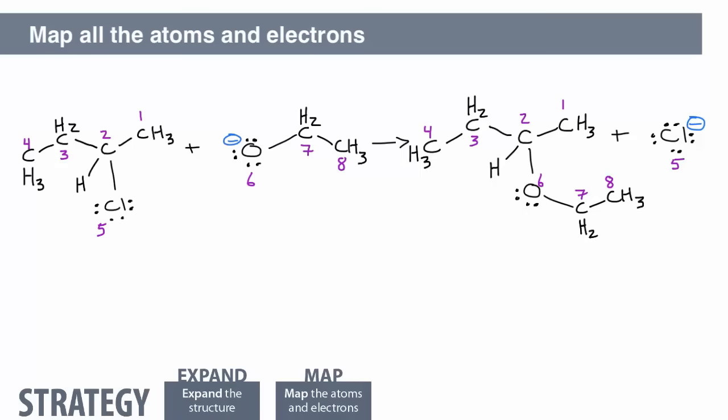It's also important to map the electrons, because they're the ones involved in bond formation and breakage. Notice that the carbon-chlorine bond has broken, and a carbon-oxygen bond has formed.